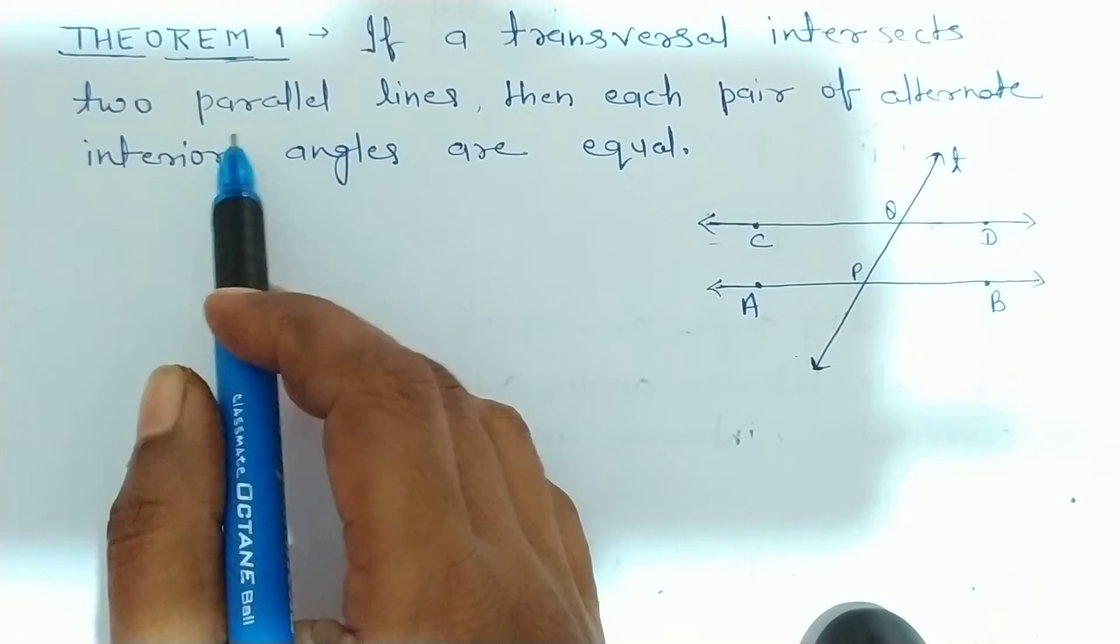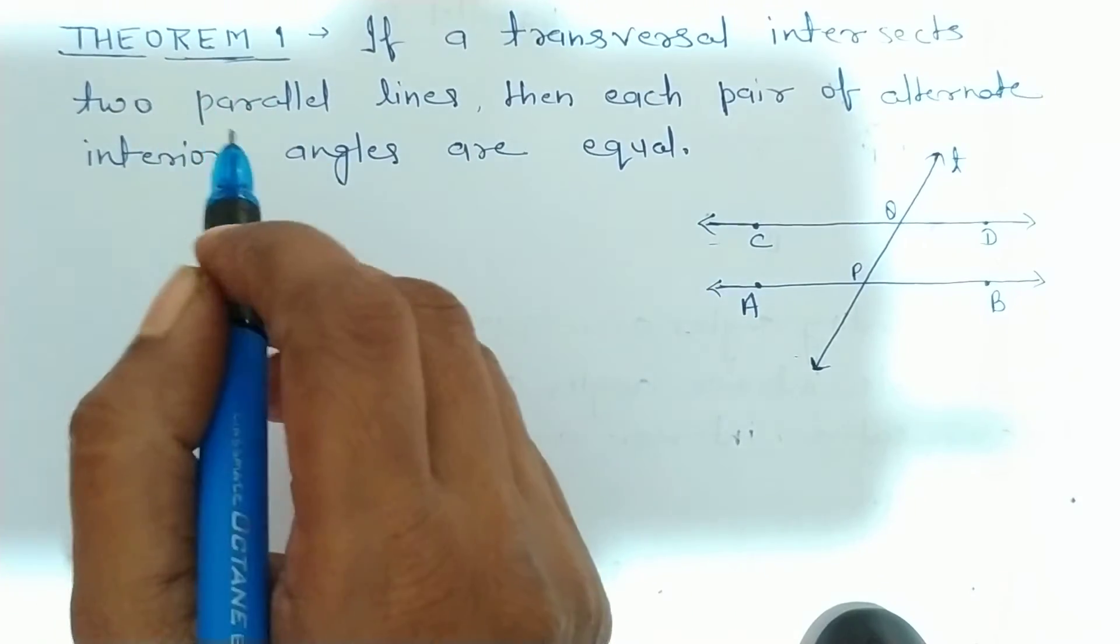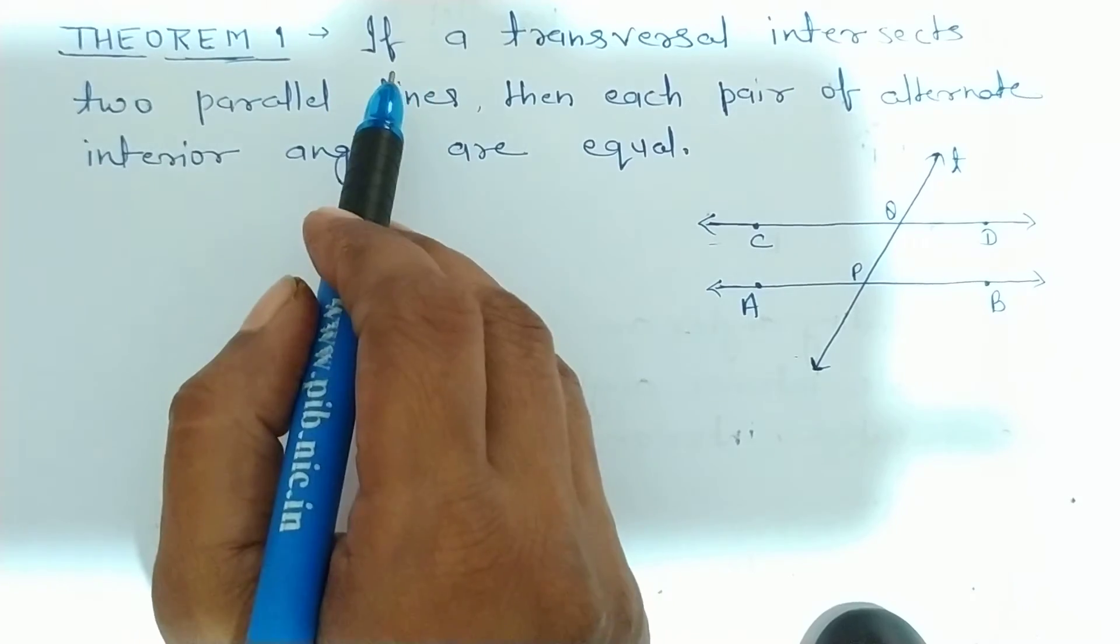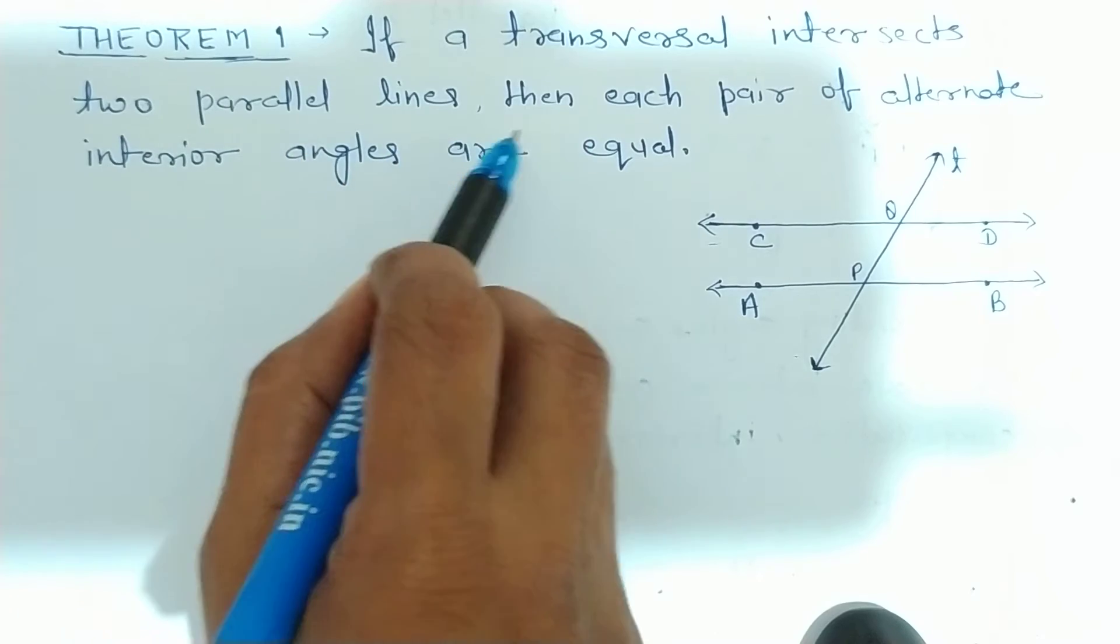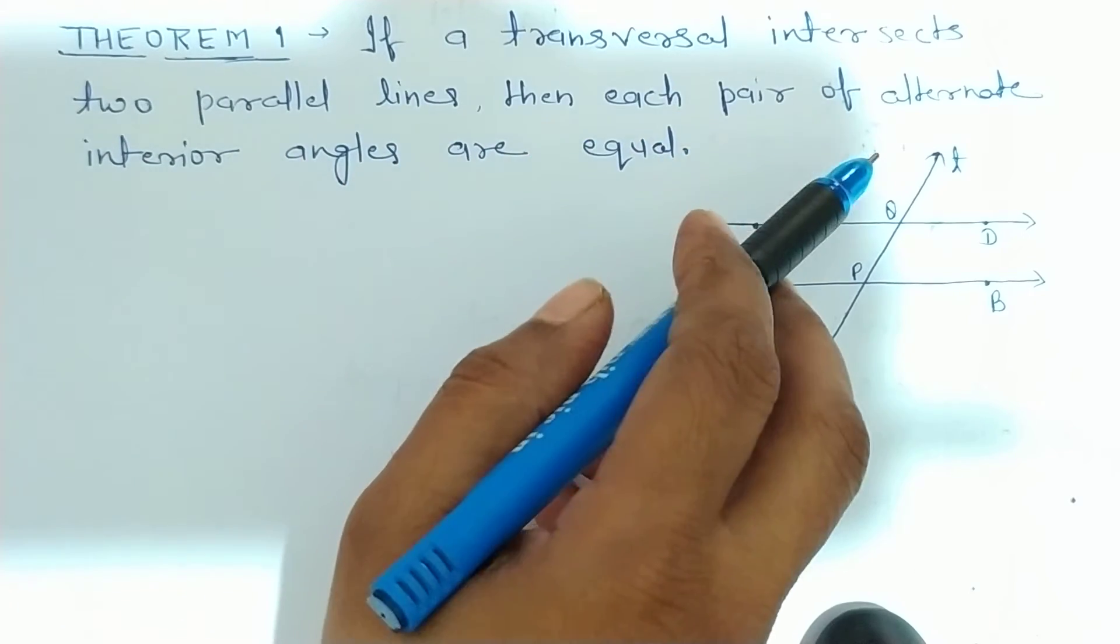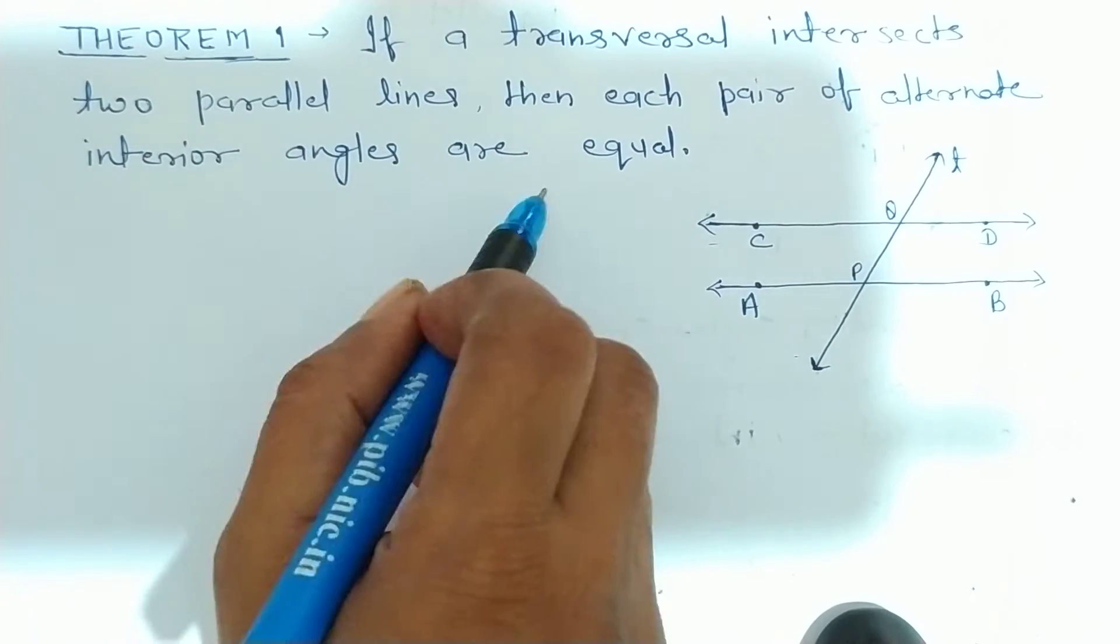Theek hai, now theorem one, so let's start theorem one. If a transversal intersects two parallel lines, then each pair of alternate interior angles are equal.